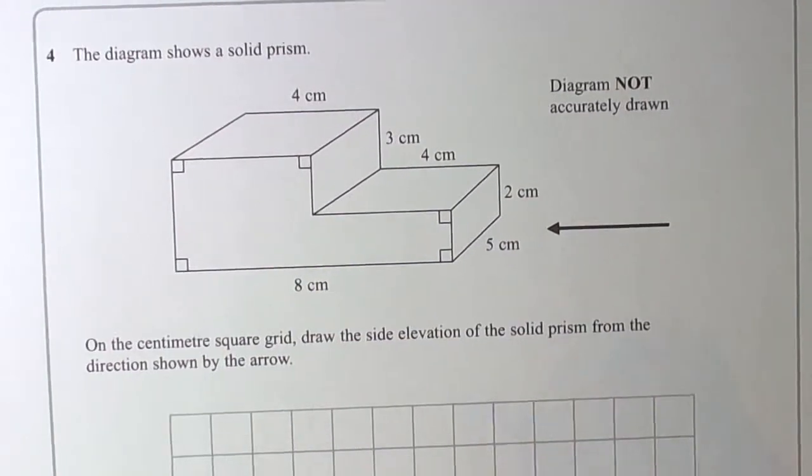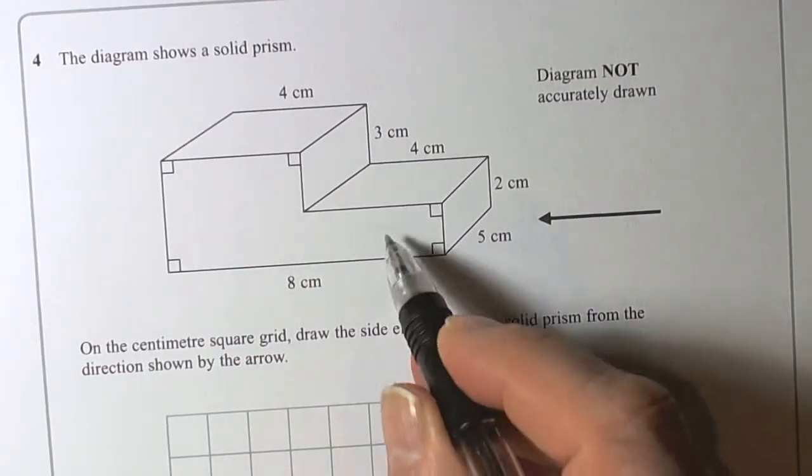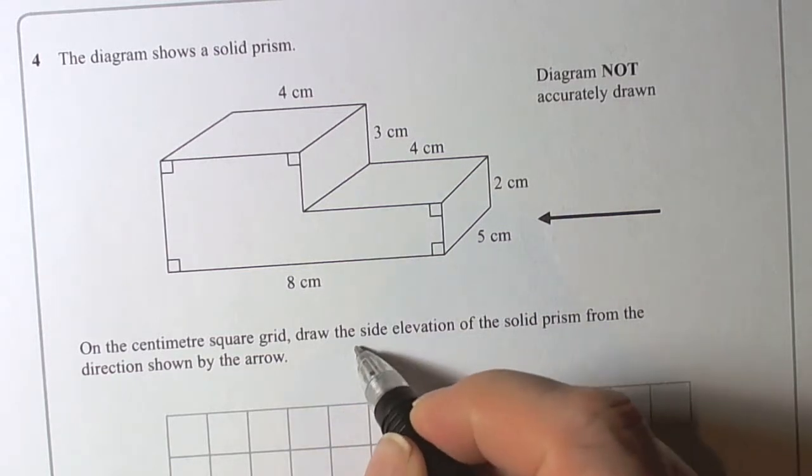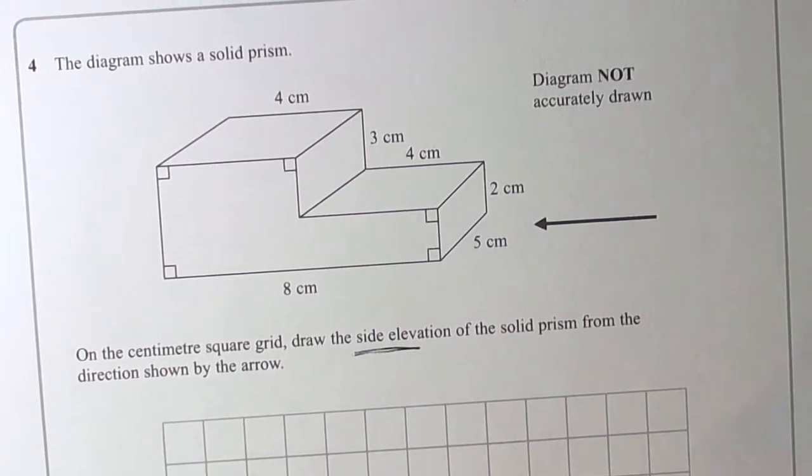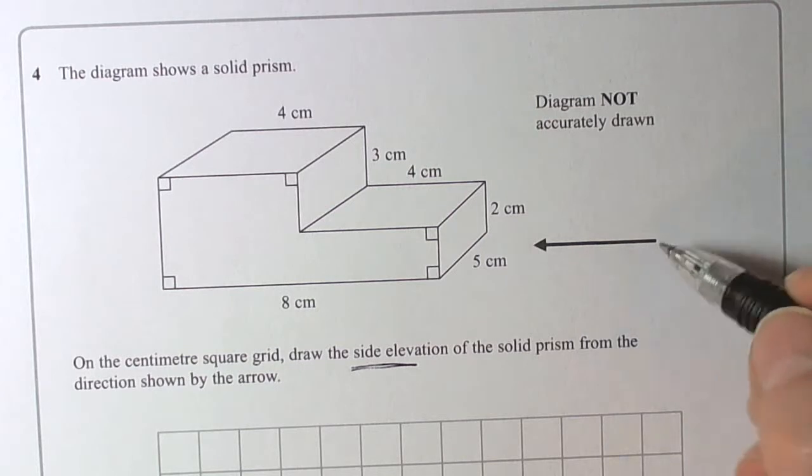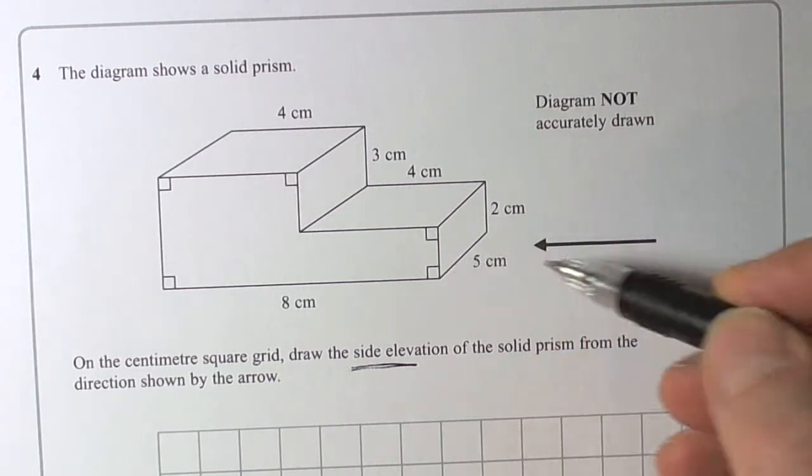This question is asking us to work with elevations of a 3D shape. It's asking us to draw the side elevation, and it's given us the hint that the side elevation is coming from the right-hand side of the picture.